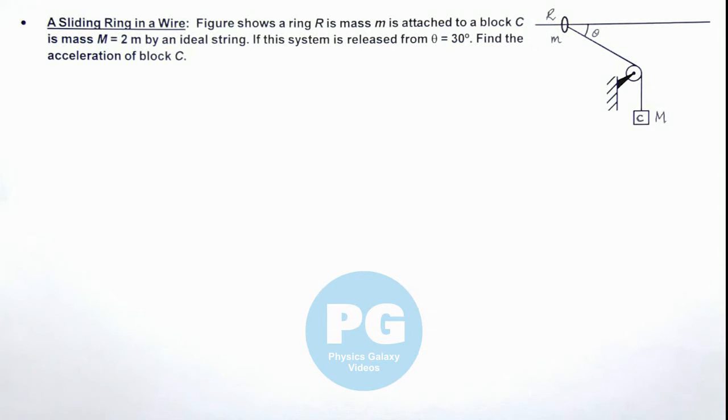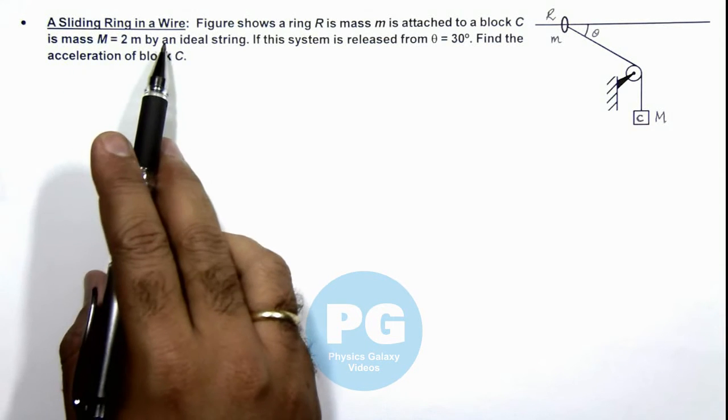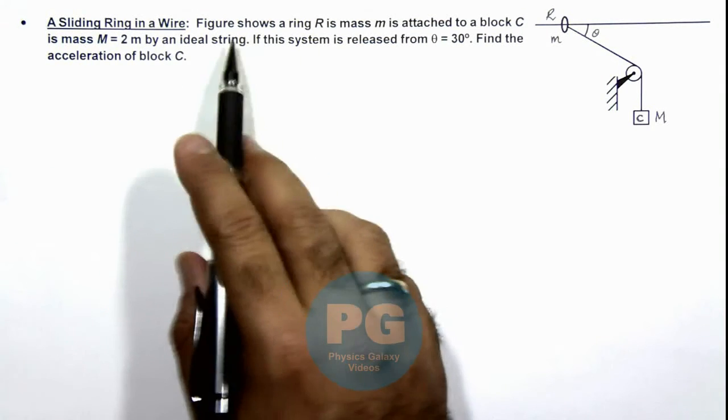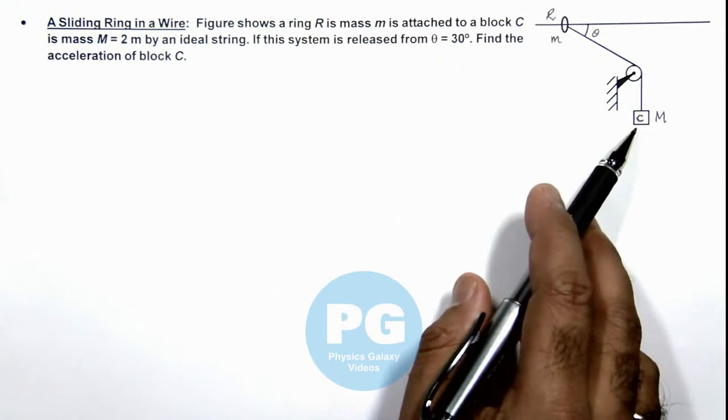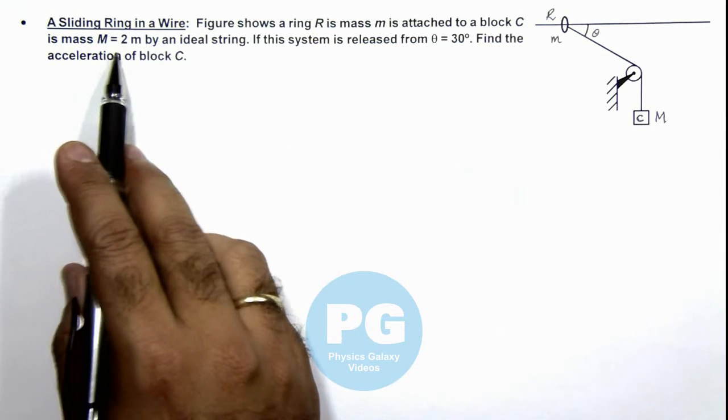In this illustration we'll discuss a sliding ring in a wire. Here the figure shows a ring R which is of mass m attached to a block C which is of mass 2m.